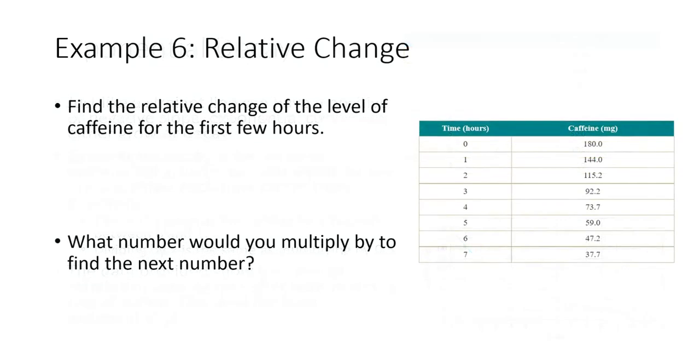Let's find the relative change in the level of caffeine for the first few hours. So 144 minus the initial amount 180 divided by the original amount 180. We get minus 0.2. If we do the next one, 115.2 minus 144 over 144, negative 28.8 divided by 144, minus 0.2.